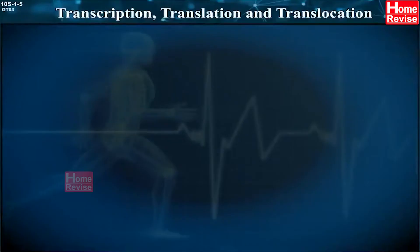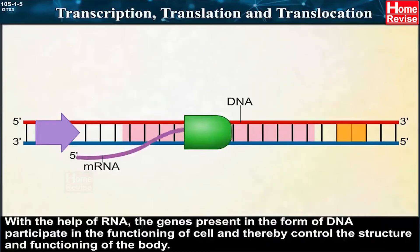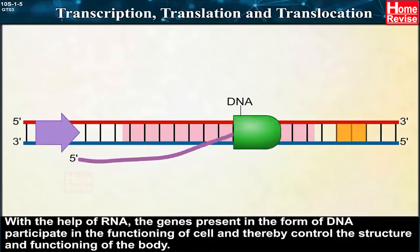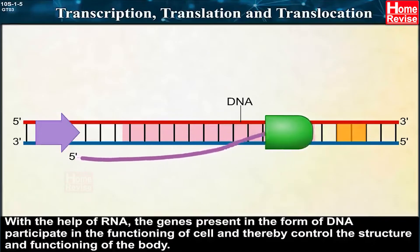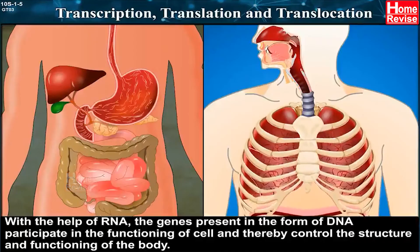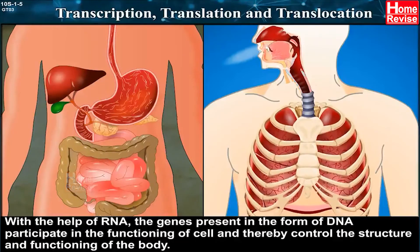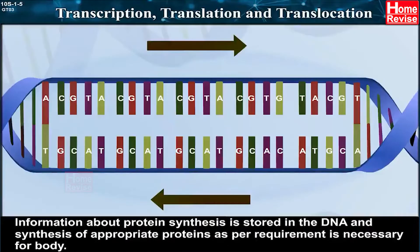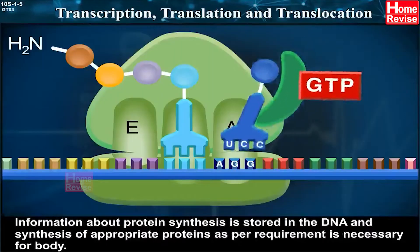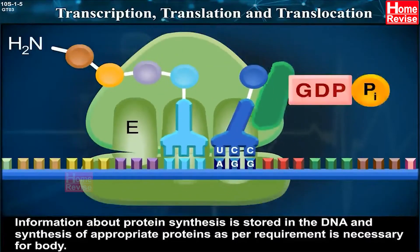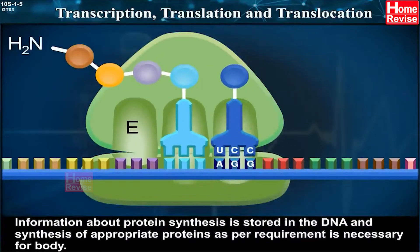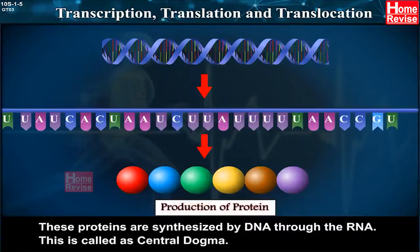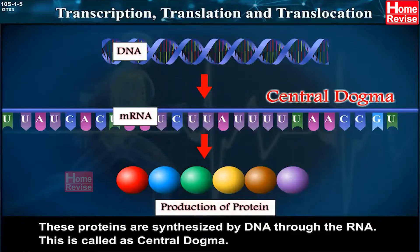Transcription, Translation and Translocation. With the help of RNA, the genes present in the form of DNA participate in the functioning of the cell, and thereby control the structure and functioning of the body. Information about protein synthesis is stored in the DNA, and synthesis of appropriate proteins as per requirement is necessary for the body. These proteins are synthesized by DNA through the RNA. This is called the central dogma.